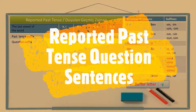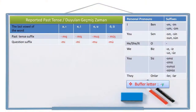Hello friends, merhaba arkadaşlar. In our previous lesson, we learned the reported past tense. And in this lesson, we will continue with the reported past tense negative and positive question sentences.